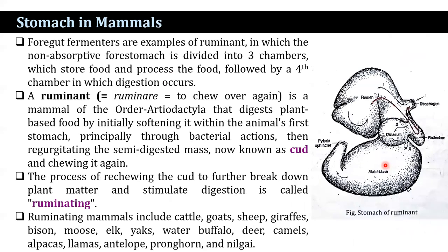In foregut fermenters such as ruminants, the stomach is divided into chambers to store and process food, followed by a fourth chamber with a digestive function. Ruminants are mammals of the order Artiodactyla that digest plant-based food by initially retaining it within the first stomach, principally through bacterial action, then regurgitating the semi-digested mass, known as cud, and chewing it again. The process of re-chewing the cud to further break down plant matter and stimulate digestion is known as rumination. Ruminating mammals include cattle, goats, sheep, giraffes, bison, moose, elk, water buffalo, deer, camels, alpacas, antelopes, pronghorns, nilgai, etc.